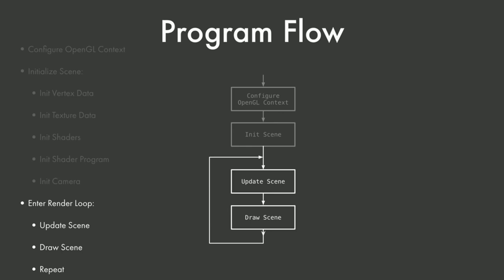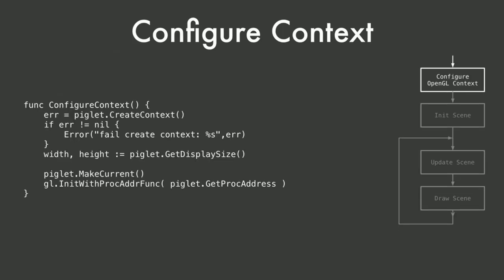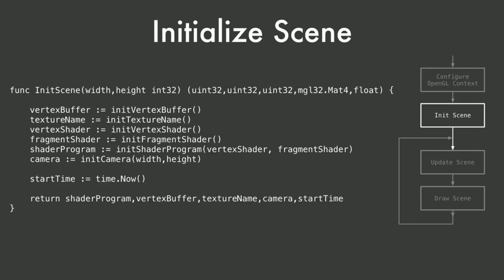After initializing the scene, you enter the render loop: update the scene with user input or elapsed time for animation, then redraw the scene, and repeat around 60 times per second. Configuring the context on Raspberry Pi involves calling create_context, checking for errors, asking the library for screen width and height, setting the current context, and initializing the GL subsystem.